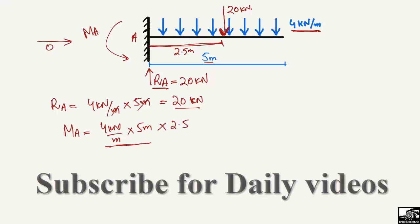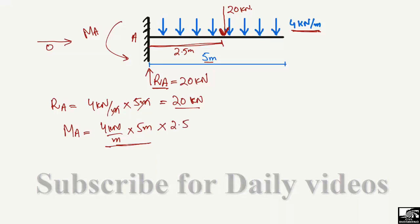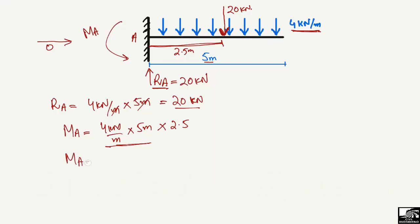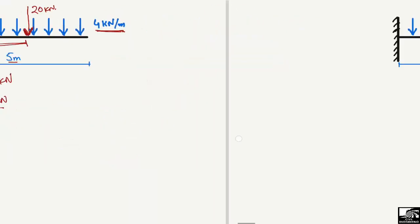The moment at point A comes out to be 20 kilonewton multiplied by 2.5 meters, which equals 50 kilonewton·meter. So the moment at this point is 50 kilonewton·meter. These are the support reactions. Now to draw the shear force and bending moment diagram — the moment we found is 50 kilonewton·meter and the support reaction is 20 kilonewton.